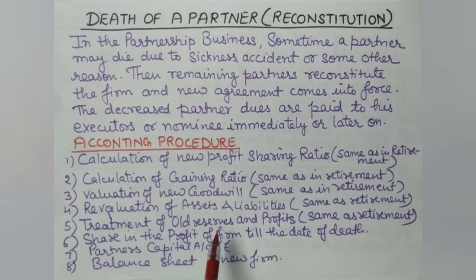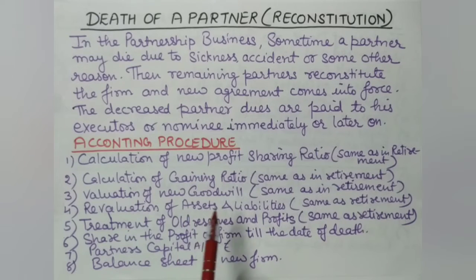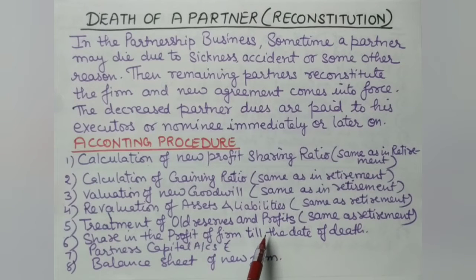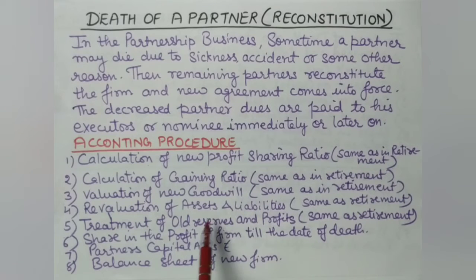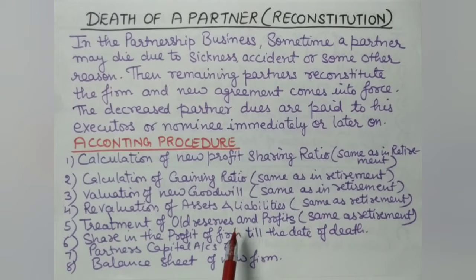Since these five steps are the same as in retirement, if you are unclear about the revaluation account, old reserves treatment, journal entries, goodwill calculation, partner's account, or payment in the gaining ratio, you can refer back to the retirement videos. The same process is followed in the death case as well. There is no change in that process.